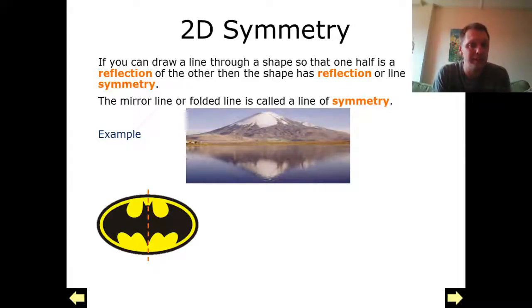A couple of well-known images here: we've got the Batman sign which has got one line of symmetry. If we were to fold this image through this line here, this side would meet this side exactly.